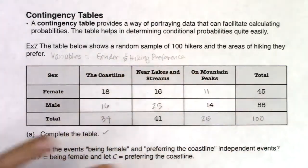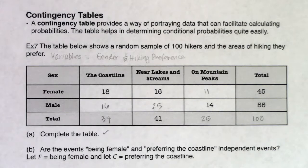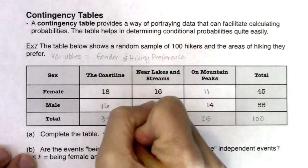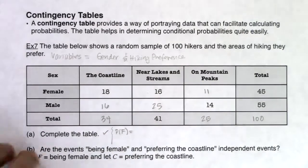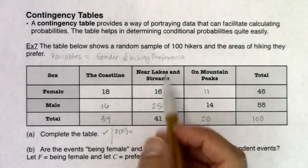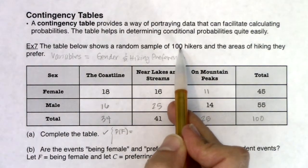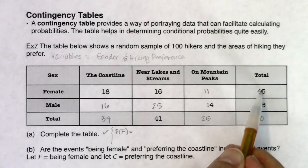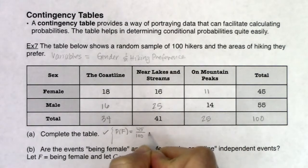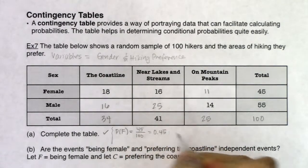Before we get into parts B through D, let's get some basics on how we start to handle table problems. For example, the probability that I spoke to a random hiker and that hiker was female — I want the probability of F. I had 100 hikers. How many females did I have total? 45. How many hikers in my sample space? 100. So the probability is 0.45.